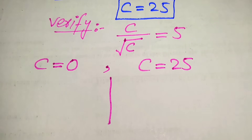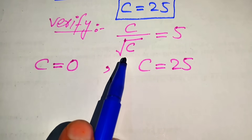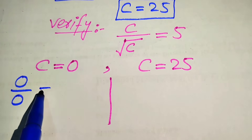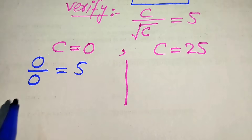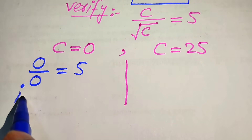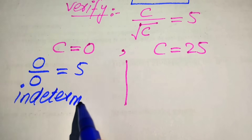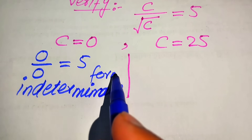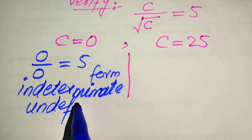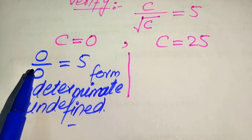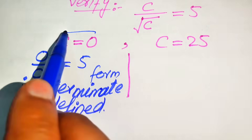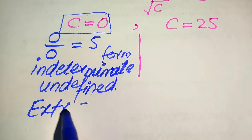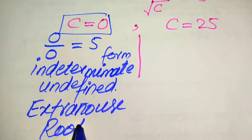First, we focus on c equals 0. When we substitute c equals 0 into the left-hand side, it becomes 0 over 0, because c is 0 and square root of c is also 0, and this should equal 5. You see that the left-hand side becomes 0 over 0 — in other words, it is the indeterminate form, or we say it is undefined. So c equals 0 does not satisfy the given equation, meaning c equals 0 is an extraneous root.